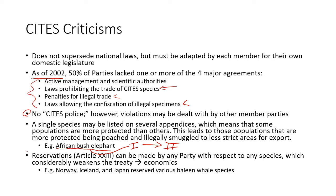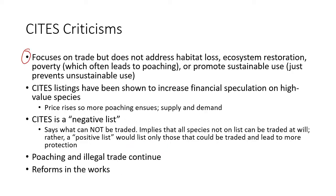There are also reservations. CITES allows for reservations based on economics. For example, Norway, Iceland, and Japan have reservations on several species of baleen whale, so they can still practice whaling. In my opinion, the biggest criticism of CITES is that it focuses on trade. It doesn't address habitat loss, poaching, the poverty that leads to poaching, ecosystem restoration, or sustainability. All it does is focus on trade.